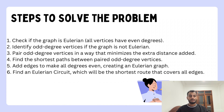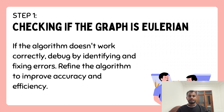Step one — checking if the graph is Eulerian. To start solving the Chinese postman problem, we first need to check whether the graph is Eulerian. A graph has an Eulerian circuit if all vertices have an even degree and are connected. A graph has an Eulerian path if exactly two vertices have an odd degree and the graph is connected. If neither condition is satisfied, the problem does not have an Eulerian path or circuit.